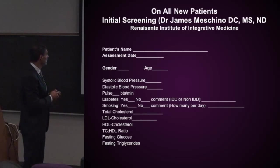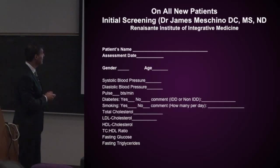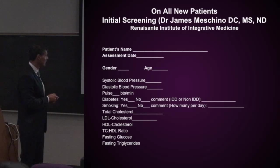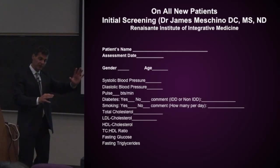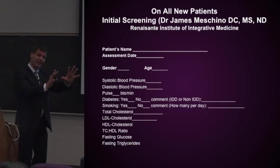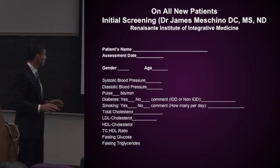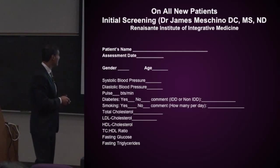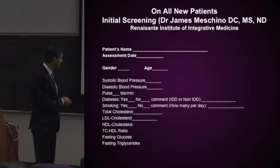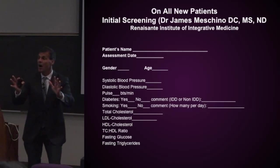This is my initial screening form. As you can see: blood pressure, pulse, diabetes, total cholesterol, LDL, HDL, total cholesterol-to-HDL ratio — which I'm going to calculate; I want it to be under 3.1. Fasting glucose, fasting triglycerides, C-reactive protein, fibrinogen, and the INR.